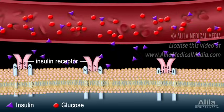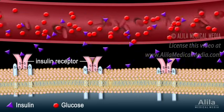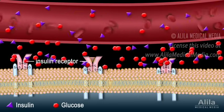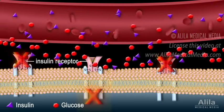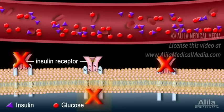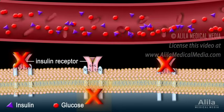As a reminder, type 2 diabetics do produce insulin, but their cells do not respond to insulin and therefore cannot use glucose.